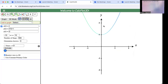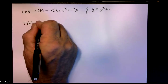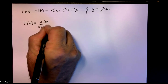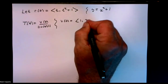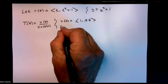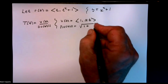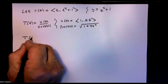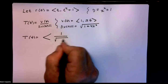Our goal here is to find T(t) and N(t). T(t) is the unit tangent vector — it is the velocity divided by the speed. The velocity v(t) is ⟨1, 2t⟩. The speed is the magnitude of that velocity vector: the square root of 1 plus 4t squared. So T(t) is 1 over the square root of 1 plus 4t squared times ⟨1, 2t⟩.